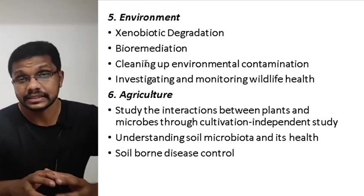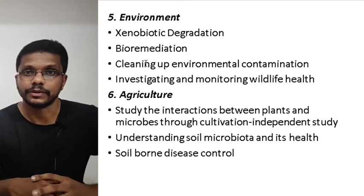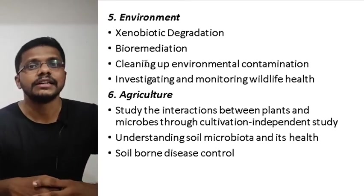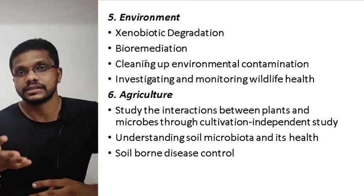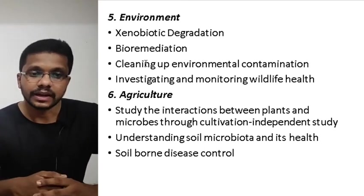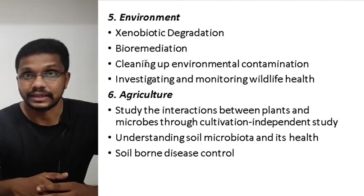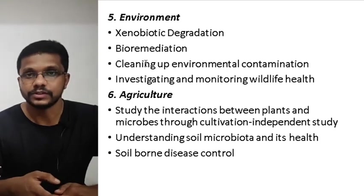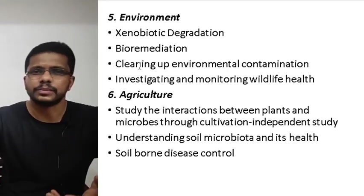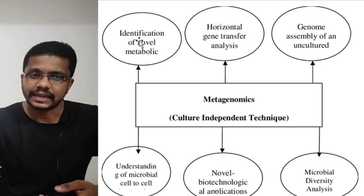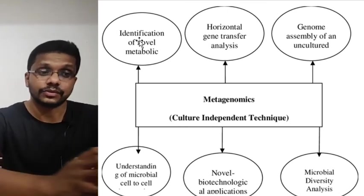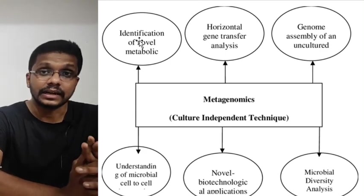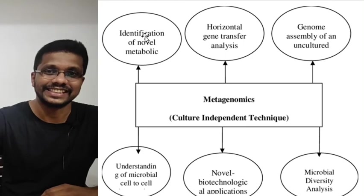In environmental biotechnology and conservation, metagenomics can be used to find synoptic-degrading microorganisms for bioremediation — cleaning up environments, especially oil spills — and for investigating and monitoring wildlife health. In agriculture, it is used to find plant-microorganism interactions, since most microorganisms interacting with plants cannot be cultured. It is also used for understanding soil microbiota, the health of the soil based on microbial diversity, and controlling soil-borne diseases. The next session will cover the steps in metagenomics analysis.